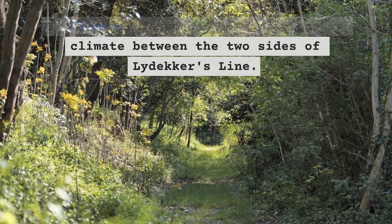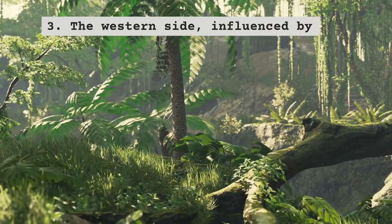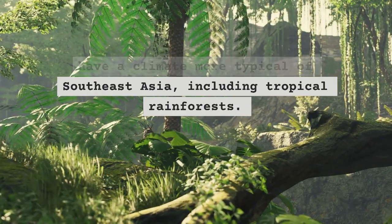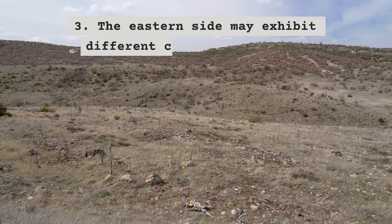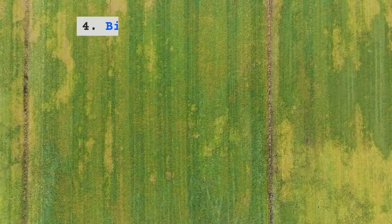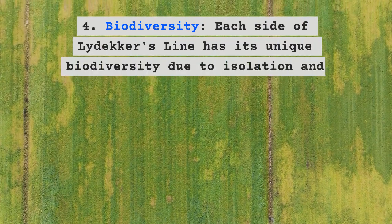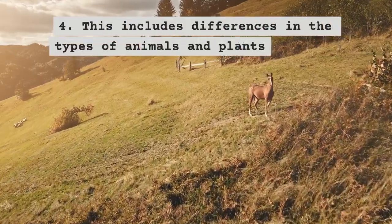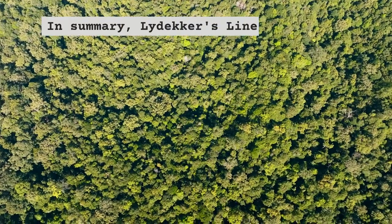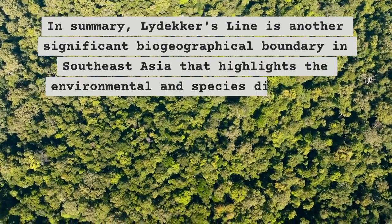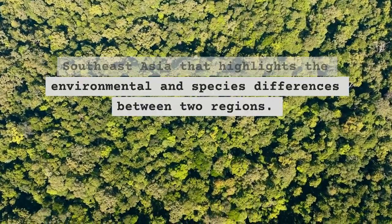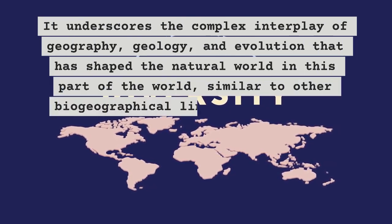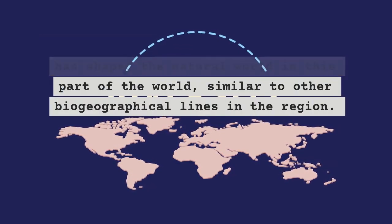There can be variations in climate between the two sides of Lydekker's Line. The western side, influenced by its proximity to the Asian mainland, may have a climate more typical of Southeast Asia, including tropical rainforests, while the eastern side may exhibit different climatic patterns. Each side of Lydekker's Line has its unique biodiversity due to isolation and historical factors, including differences in types of animals and plants. In summary, Lydekker's Line is another significant biogeographical boundary in Southeast Asia, similar to other biogeographical lines in the region, underscoring the complex interplay of geography, geology, and evolution.